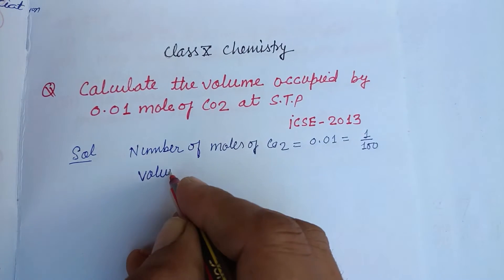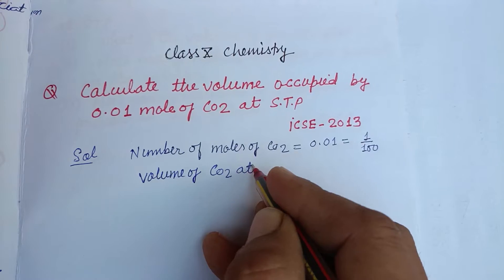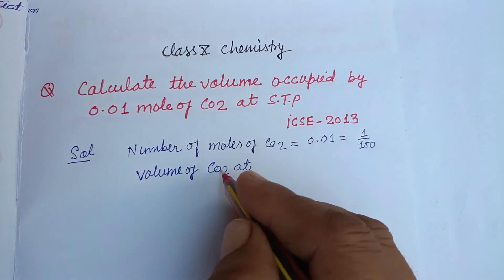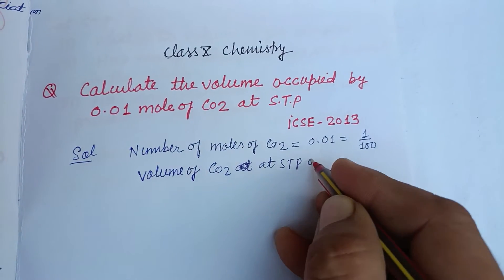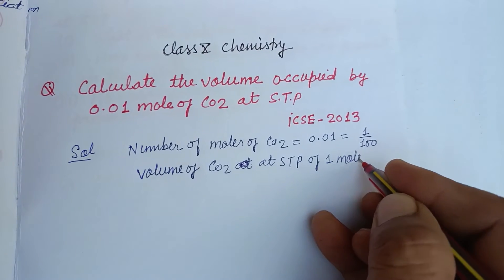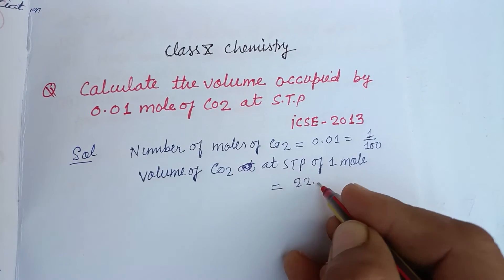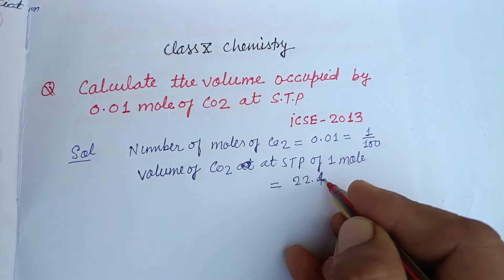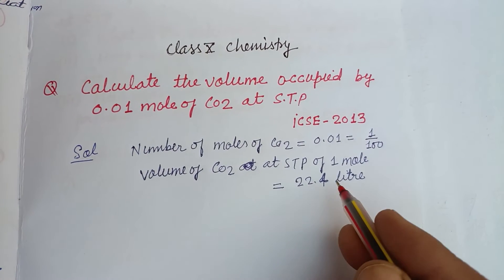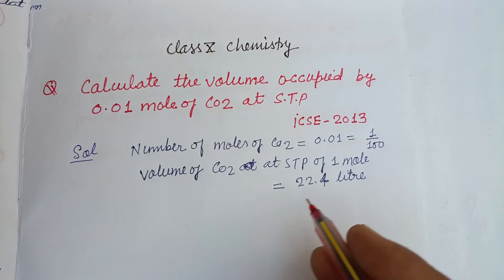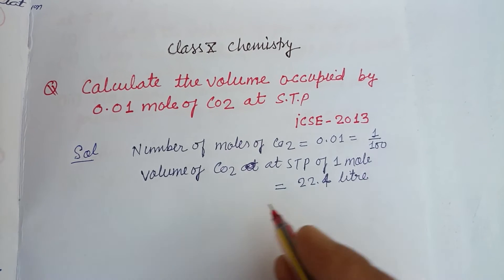The volume of CO₂ at STP — you know that one mole of a gas occupies 22.4 liters at STP. So the volume of CO₂ at STP for one mole is 22.4 liters.